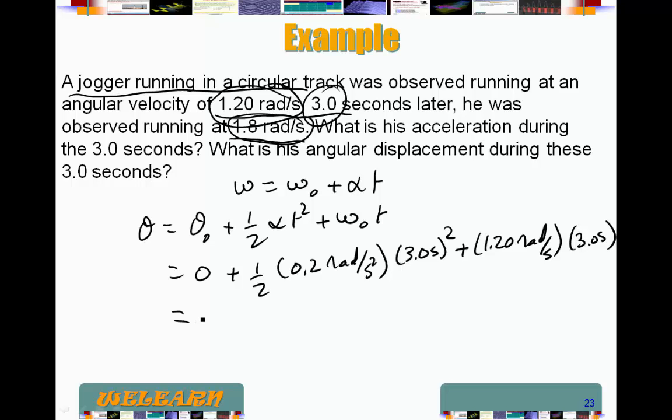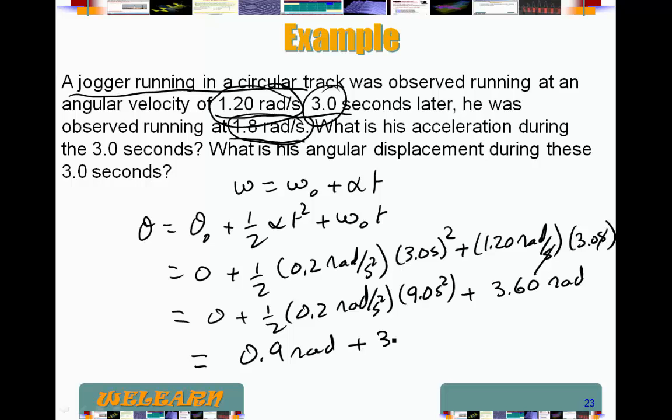So in this case, that would be 0 plus 1/2 radians per second squared times 9 seconds squared plus 1.2 times 3. So that gives us 3.6 radians per second, so it would be left with radians. And we have 9 times 0.2 and divided by 2. That would give us 0.9. And then radians per second squared times 2.2 that gives us radians plus 3.6 radians. So it is 4.5 radians.